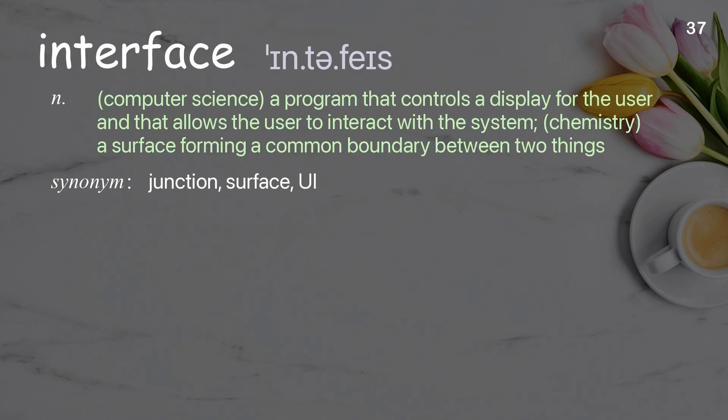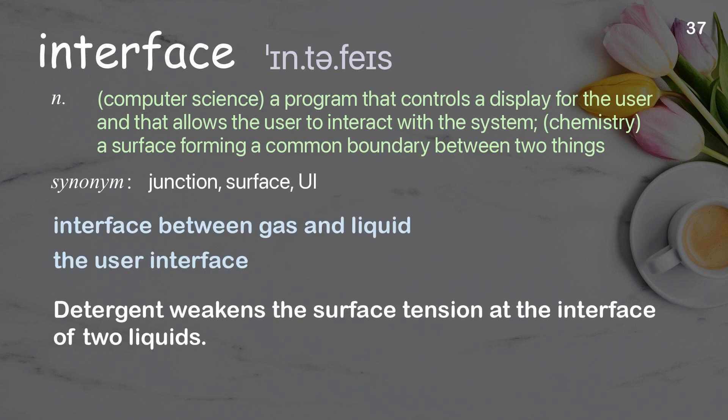Interface: in computer science, a program that controls a display for the user and allows the user to interact with the system; in chemistry, a surface forming a common boundary between two things. Examples: interface between gas and liquid, the user interface. Detergent weakens the surface tension at the interface of two liquids.